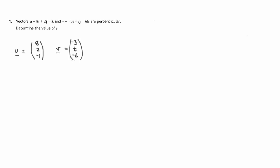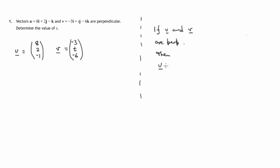We're told that these two vectors are perpendicular, and we're asked to find the value of t. The result we're going to use is: if two vectors u and v are perpendicular, then the dot product u dot v will be equal to zero.